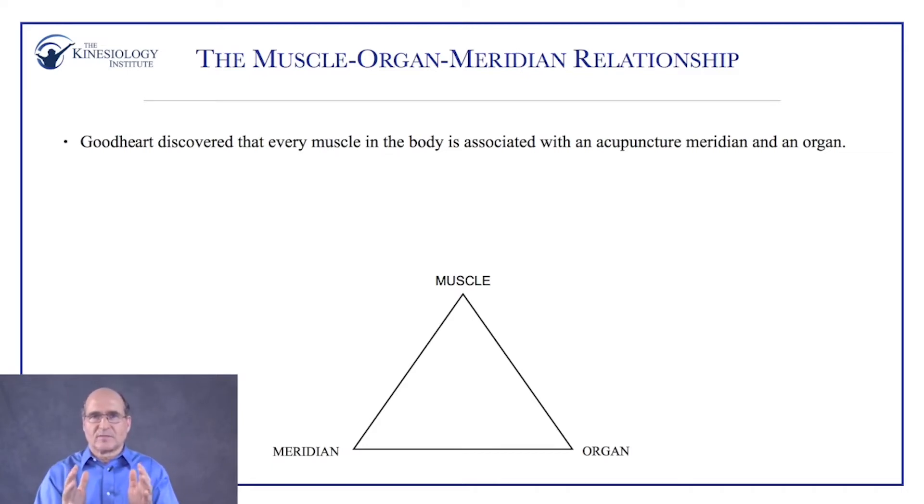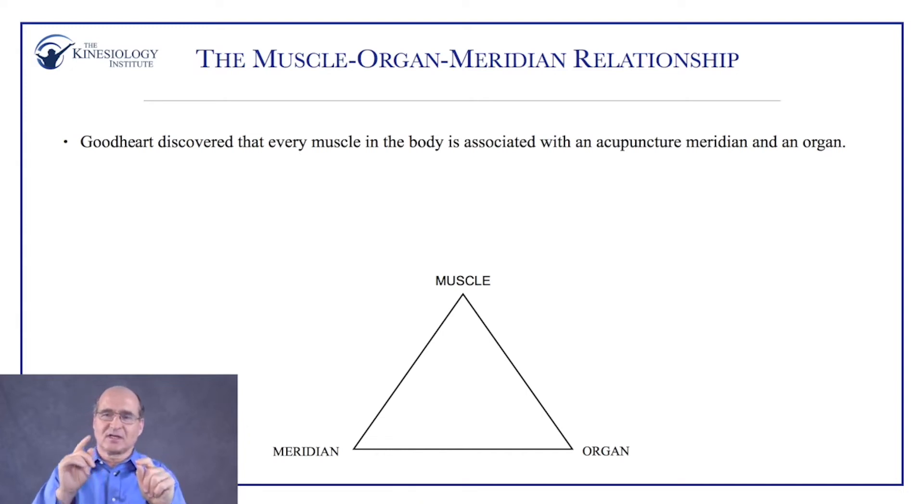The muscle-organ-meridian relationship is a key element of kinesiology. Goodhart discovered that every muscle in your body is associated with an acupuncture meridian and an organ. For example, the small intestine is related to the quadriceps — so if you have challenges with leaky gut or your small intestine, your quadricep will test weak. There are also muscles related to the adrenal glands, such as the sartorius and gracilis, which are medial knee stabilizers. People with medial knee pain often have adrenal insufficiency — the adrenals help us deal with stress.